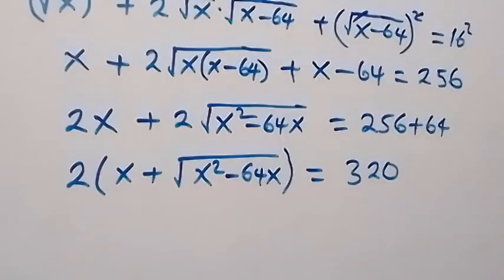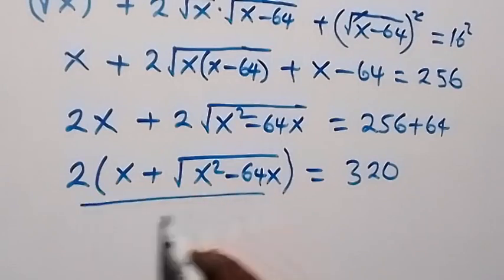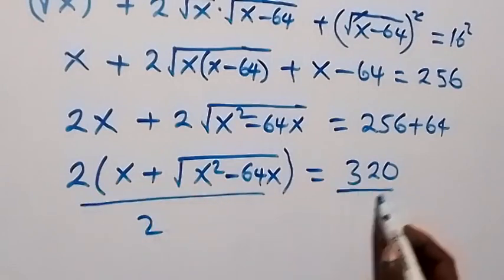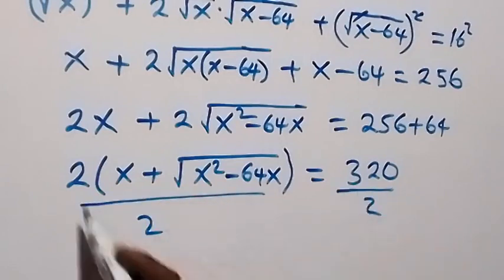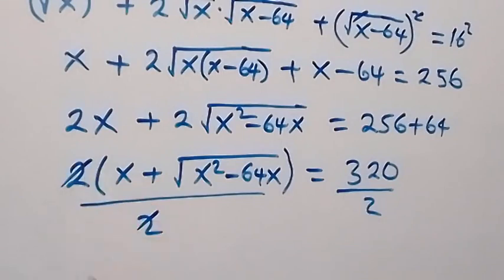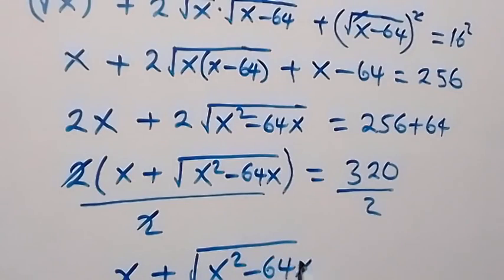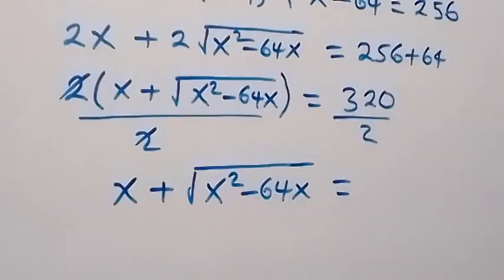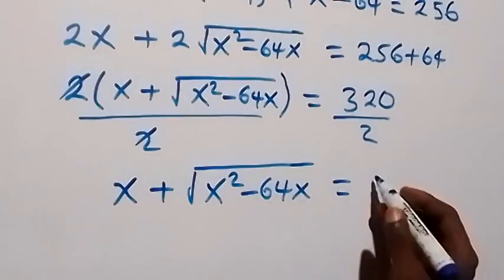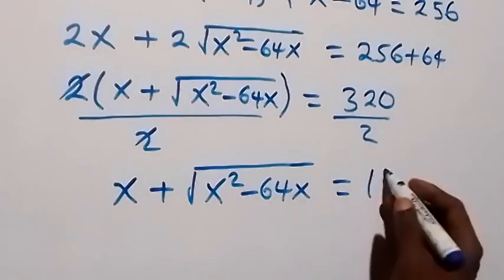From here we can divide both sides by 2 in order to cancel the 2s. We are then left with x + √(x² − 64x) equals 320 ÷ 2, which is 160.